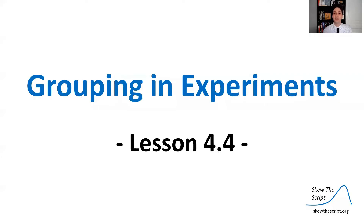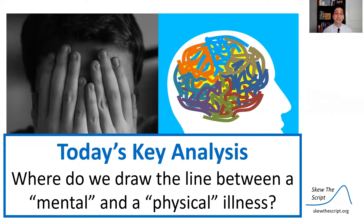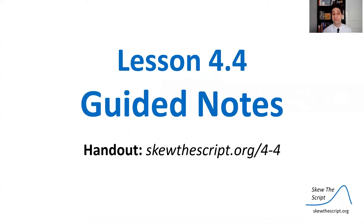Today's lesson is on grouping and experiments. This is lesson 4.4 in our core sequence, and the main topic we'll be discussing today is where do we draw the line between what we consider to be a mental illness and what we consider to be a physical illness — a very interesting problem in psychology. If you'd like to follow along, you can print out the guided notes at the link provided.